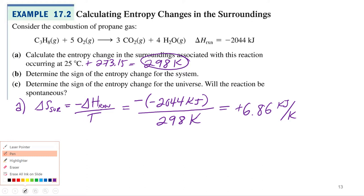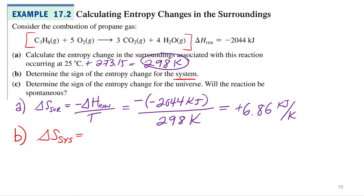For B, what we're going to want to do is just determine the sign for entropy change of the system. How are we going to do that? So we actually got to look at the equation. First thing to check is phases, see what's going on with the phases. So we're going from gases to gases, so no change in phase. Now what do we do? Coefficients, number of moles. How many moles do we got? We got 1 plus 5, that's 6.